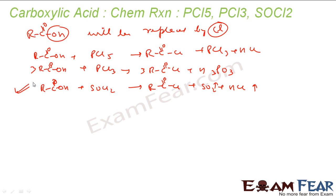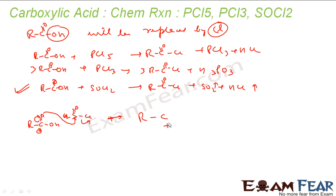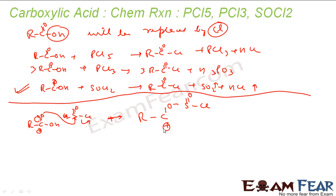Let's discuss the mechanism for the SOCl2 reaction. I have RCOOH and SOCl2. Sulfur is an electron-hungry compound, so this bond breaks, gets a negative charge, and this negative charge is attracted to the sulfur. With this, chlorine comes out and carbon gets a positive charge. Oxygen reacts with sulfur, forming a double bond there, with one chlorine on sulfur. This chlorine which came out then attacks the carbocation.